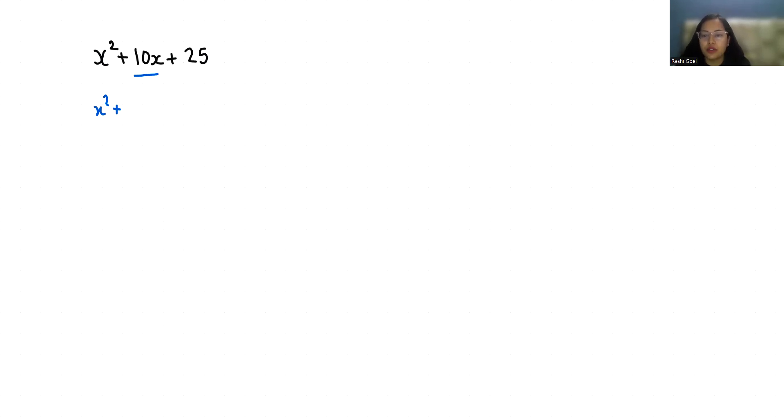These two numbers are 5 and 5. Their sum is 10 (the middle term), and when we multiply them we get the coefficient of x² times the constant: 1 × 25 = 25. So we will take the numbers 5 and 5.